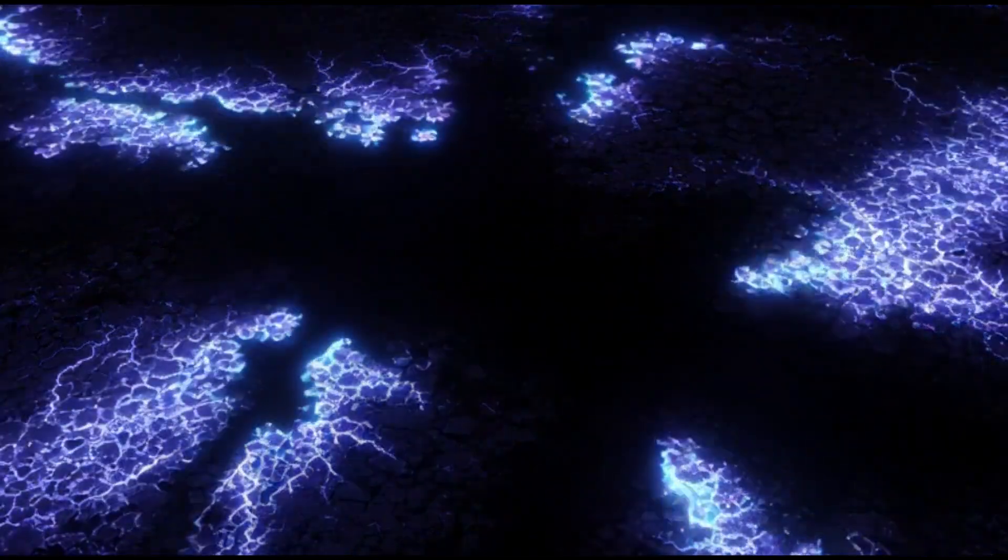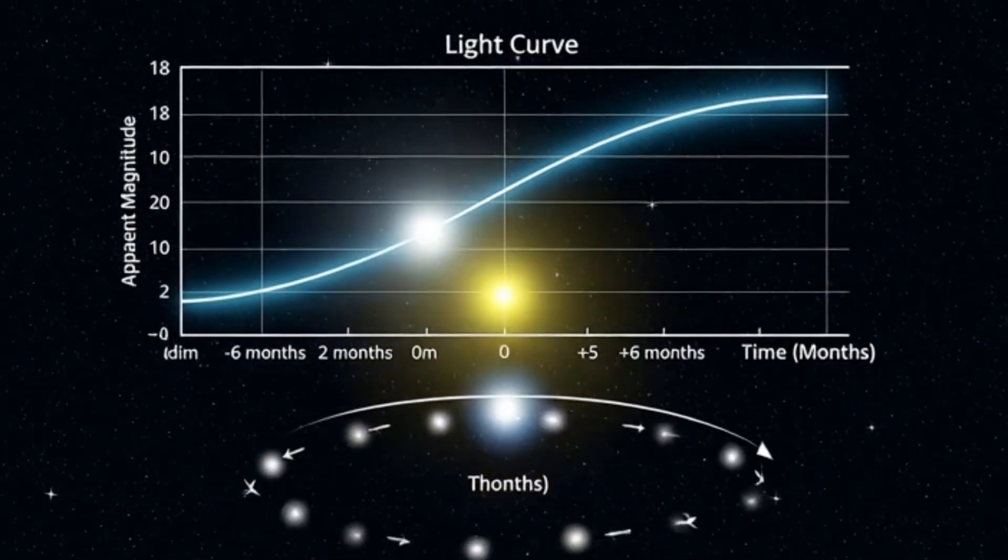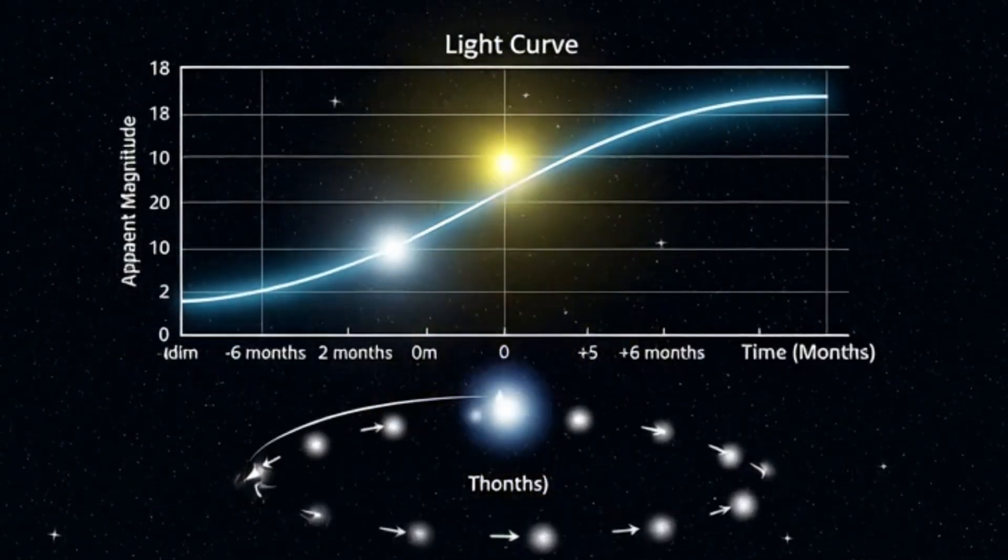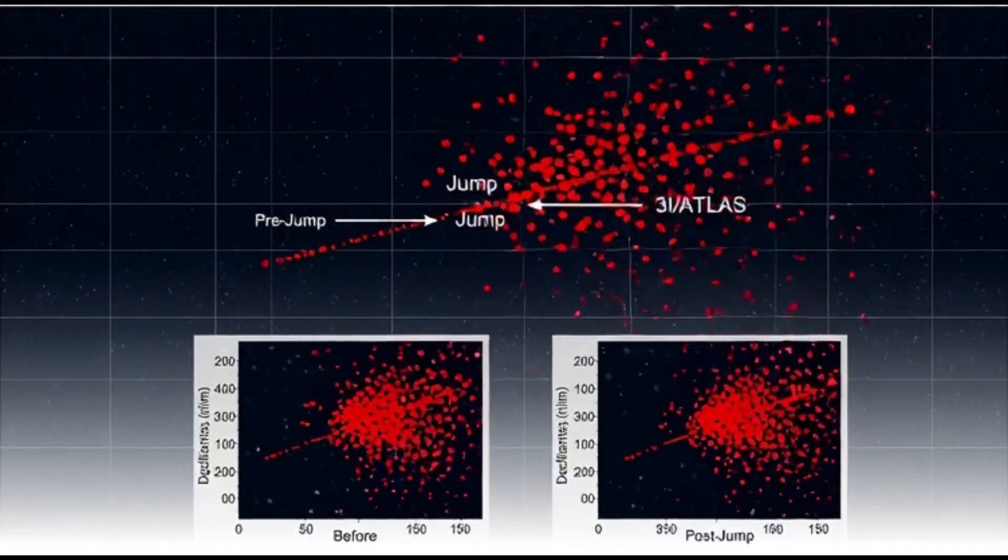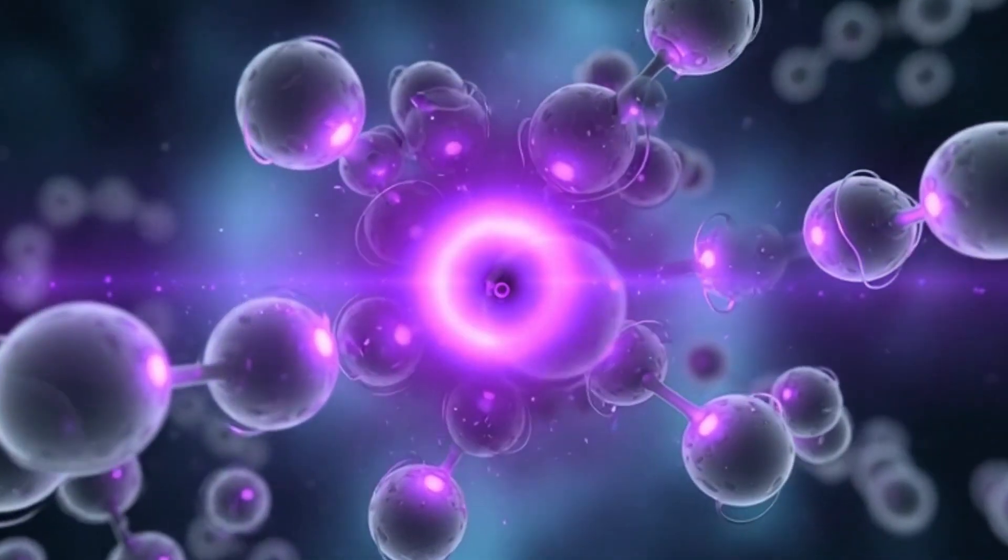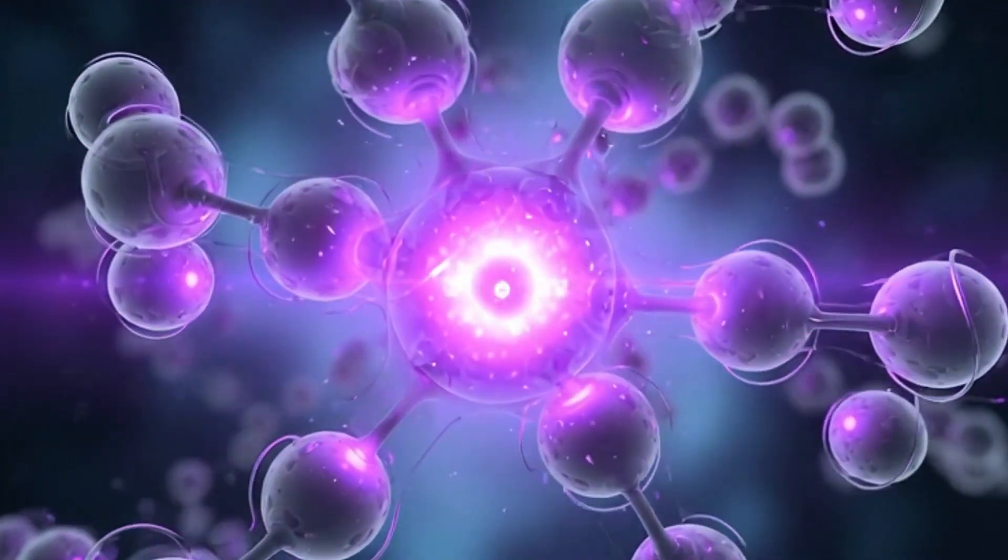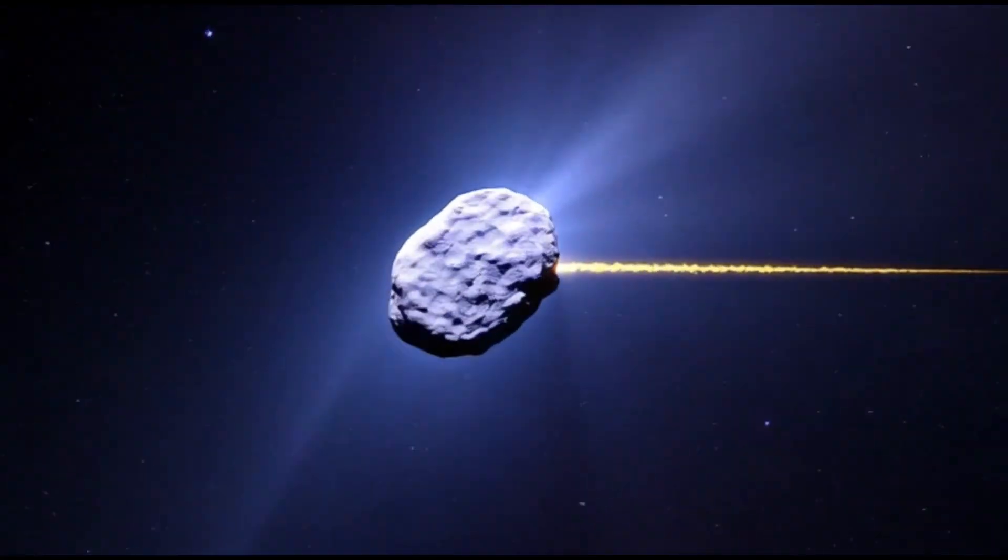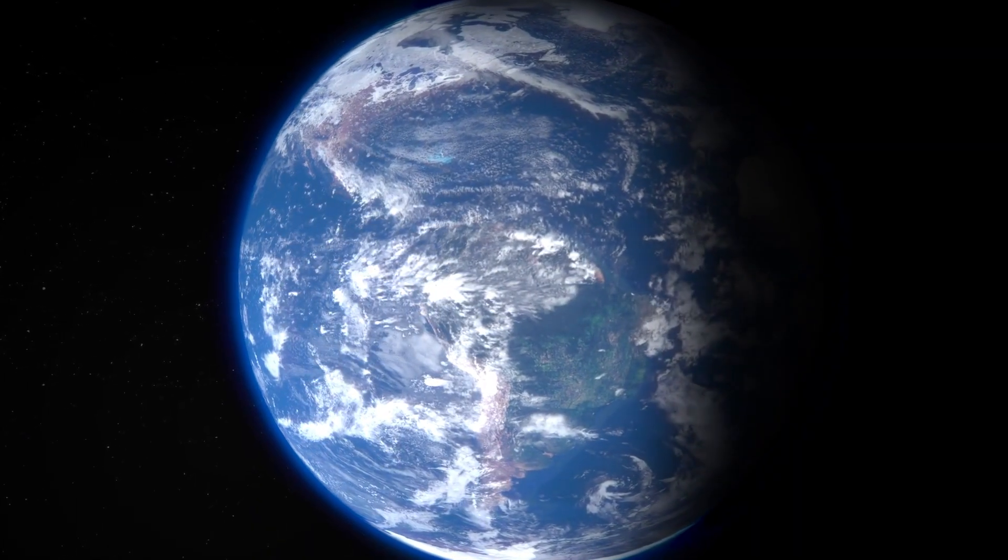It's the backbone of comet activity. It fuels the tail. It sets the brightness. In many comets, water makes up 70-80% of what they release. But 3-Eye Atlas threw that rule straight out the window. Instead of water leading the charge, the comet's coma was packed with carbon dioxide, nearly 8 times more CO2 than water vapor. That ratio isn't just unusual. It's practically unheard of. A comet missing water is like a volcano erupting without heat. It defies the basics.